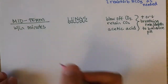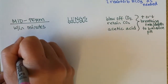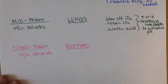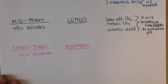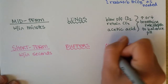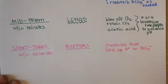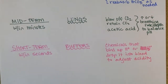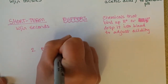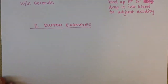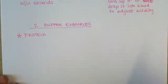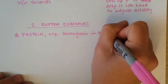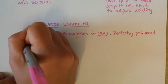Now we'll look at the quickest regulator of blood pH, which works within seconds. These are called buffers. Buffers are chemicals that bind up hydrogen or drop it into blood to adjust acidity. We're going to look at two buffer examples. One of those is protein, and we're going to focus especially on hemoglobin because it is found in red blood cells, therefore making it perfectly positioned to adjust pH.